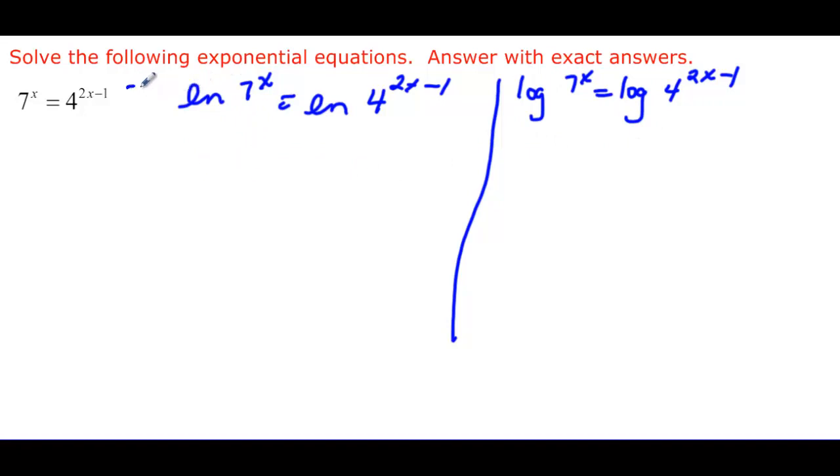So here is the equation I'm going to use. And we have the property that says log of a raised to the c is equal to c times the log of a. So we're going to use that property here. So x times the natural log of 7 is equal to, in parentheses, since more than one thing in that exponent, 2x minus 1 times ln 4.